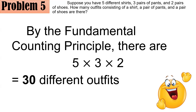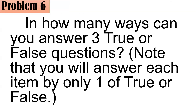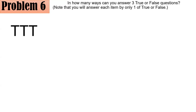Let's proceed to problem number six. In how many ways can you answer three true-or-false questions? Note that you will answer each item with only true or false, you will not leave any item blank, and you should not place two or more answers on one item. Let's reveal the solution. For example, TTT means item one is true, item two is true, and item three is true — all true.